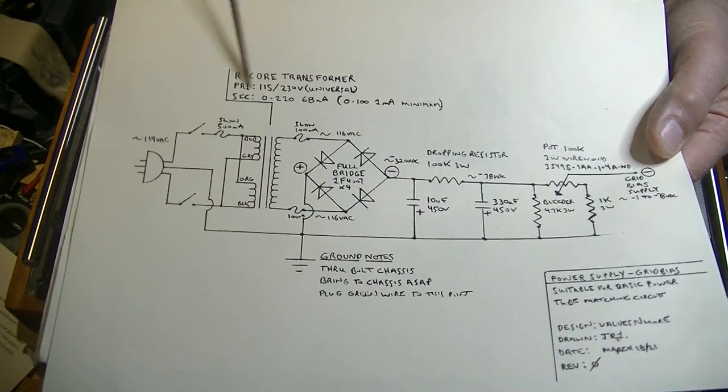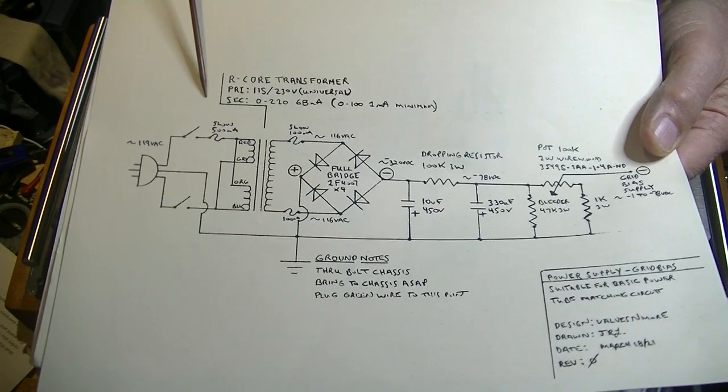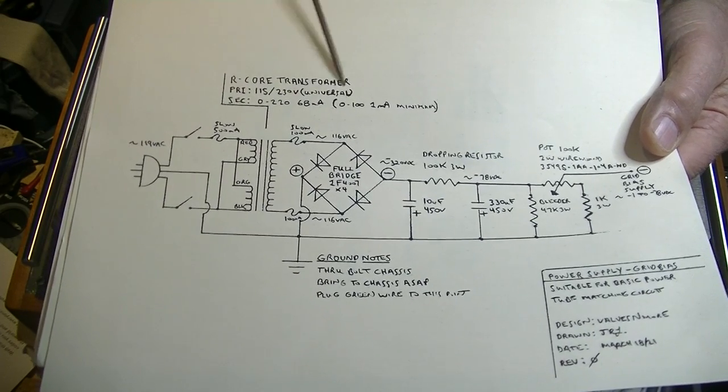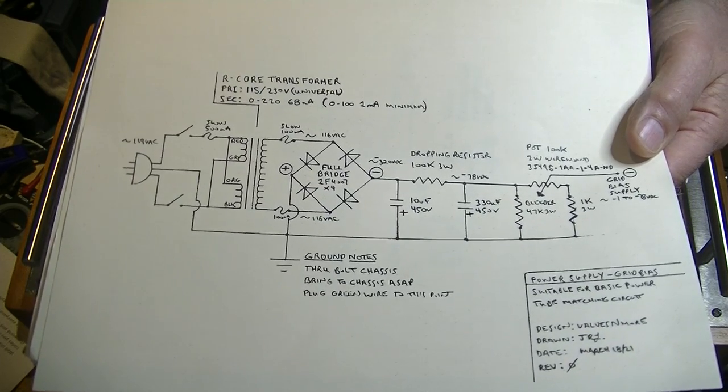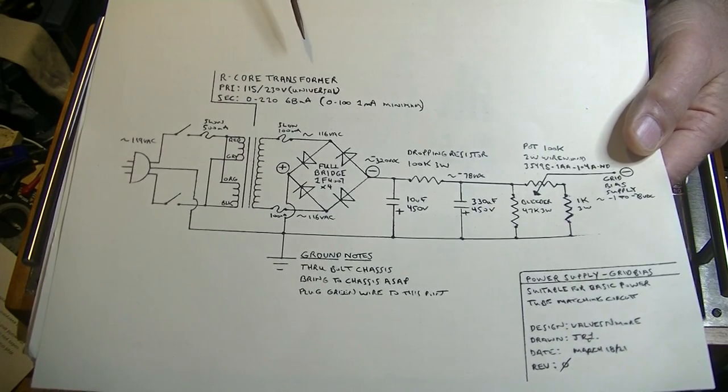You end up with your diodes all facing in this direction. The positive goes to ground. The negative becomes our power rail at the top here. Now I use the transformer I had. It's way too large, but it's still a compact R-Core transformer. It gives me a rock steady negative bias supply, let me tell you.